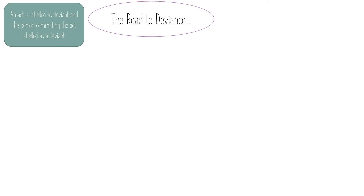I've put together a little roadmap of how Becker argued that labelling can lead to deviance. The first stage is that the act must be labelled as deviant. Sociologists don't believe that anything is deviant in itself — it only becomes deviant when somebody says that it is, when somebody gives it a label. That goes back to the idea that deviance is a social construction and that deviance is relative. It depends who is doing it, where, when, and who they're with. Becker argued that when an act is labelled as deviant, the person committing the act is labelled as a deviant too, but that's very much a social construction.